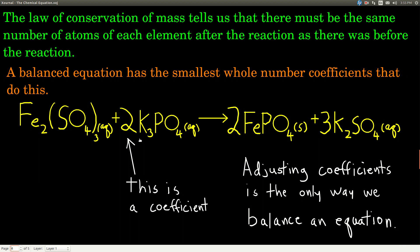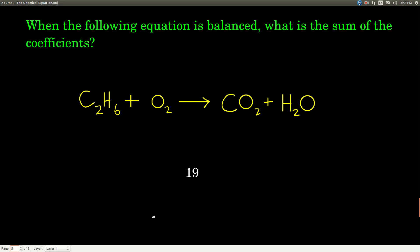Something that people try to do at first is adjust the subscripts. Don't do that because if you change the subscripts, you change the compound, and it's not the same reaction anymore, something totally different. Probably doesn't even make sense. So just adjust the coefficients. Now this one's already balanced, but let's try this. So we have this chemical equation. And this question right here is one of the ways I will ask you questions on a multiple-choice test about balancing chemical equations, and that is what is the sum of the coefficients when this equation is balanced? And the answer is 19, but let's see how we get there.